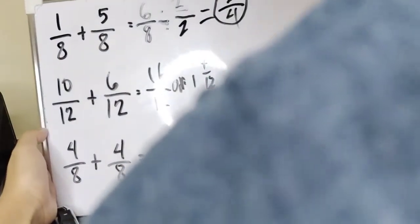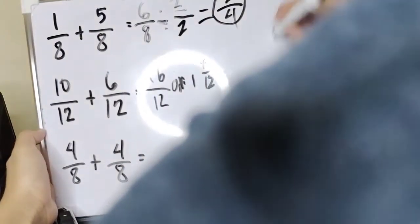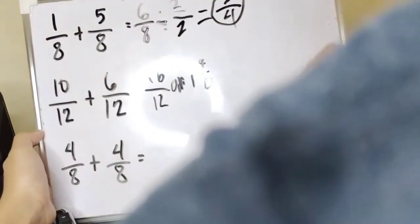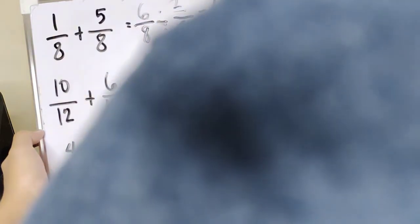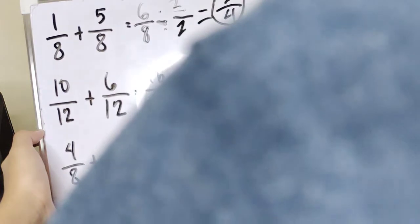Tapos naman, yung remainder ang magiging numerator. At ang, sa labas ang magiging denominator. Pwede pa bang i-lowest term yan? Pwede pa. Alin ang ilo-lowest term mo yan? 4. 4 at? 4, 12. 4. Ang GCF nila ay 4? 4.